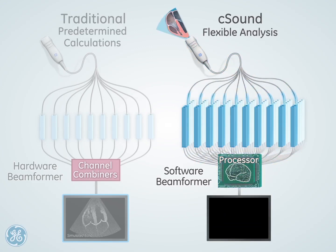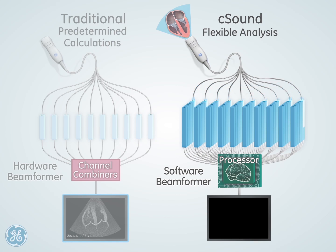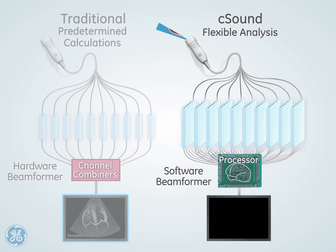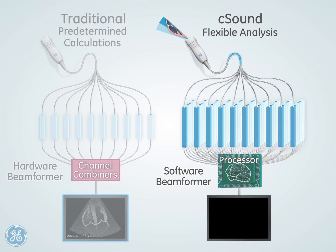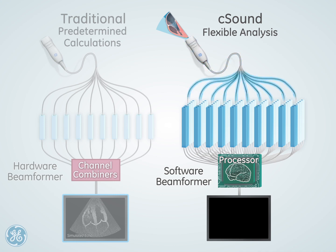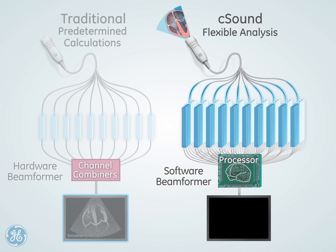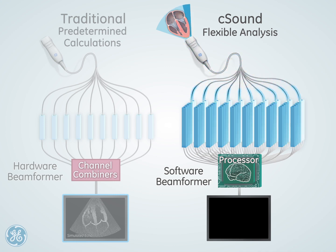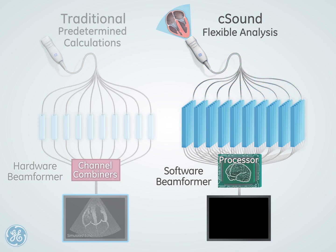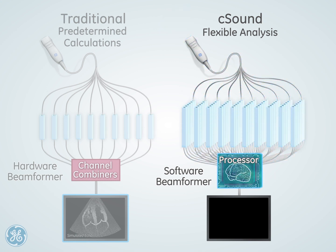As the animation slows down, observe how the RF channel data fills column by column. No data is shown on the screen until a high number of datasets from multiple transmits have been stored in memory. At that time, the processor creates the image pixel by pixel.